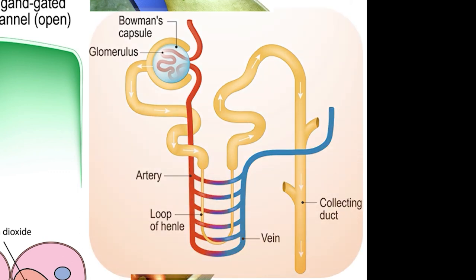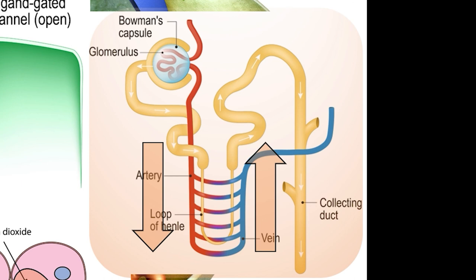Water and ions easily pass through the cell membrane in the Bowman's capsule. As they descend into the loop of Henle, they are in much more concentrated regions of the nephron. Cells in the downward loop of Henle allow the passage of water, while cells in the ascending loop block the passage of water. This allows the urine to become very concentrated as it enters the collecting duct and heads toward the bladder.